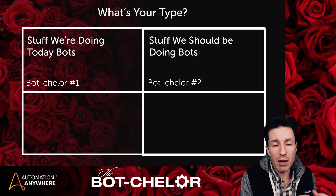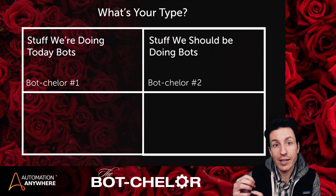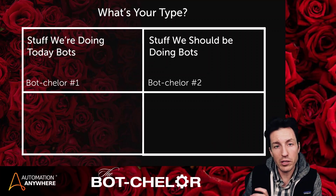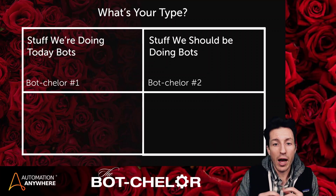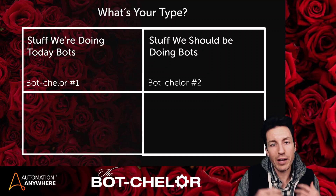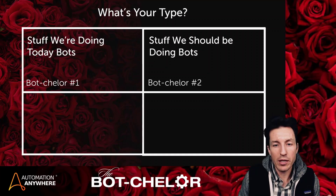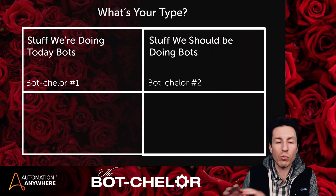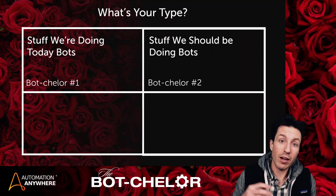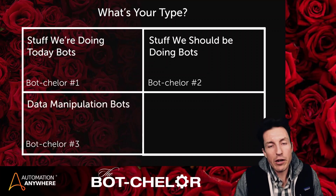Proactive system checks are another great example. If I can identify issues in my application before my customer does — whether that's an external paying customer or an internal team using an app I host — I can create a better customer experience. I want to identify and fix those issues, either automatically or manually, before my customer is the one to tell me about the problem.